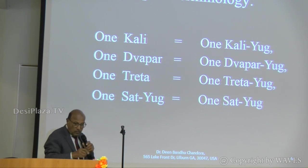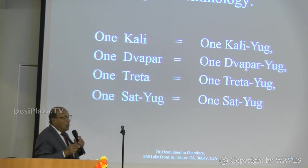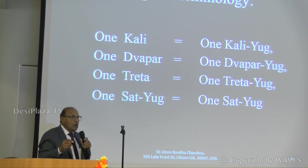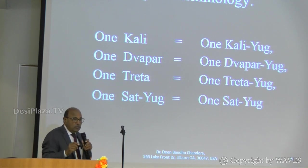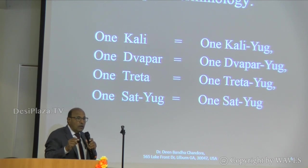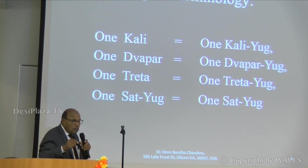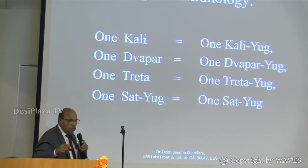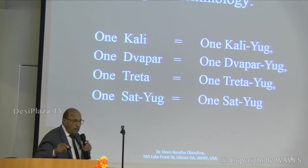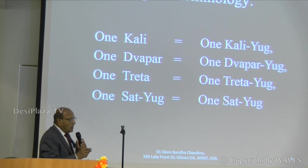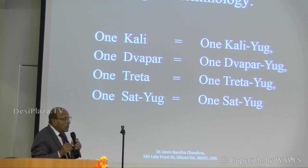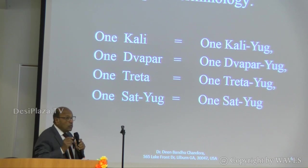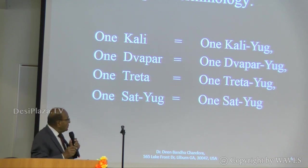One rotation, as I will show you further, completes one day of Brahma — that is one day of Kalp. And that way we can calculate the age of Srishti as well as the age of Brahman. The smallest unit for these calculations is one Kali. Kali means one unit.